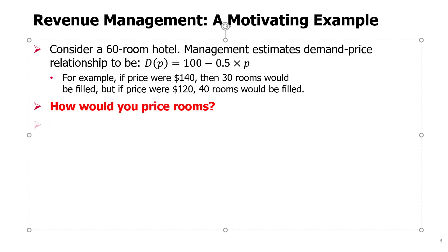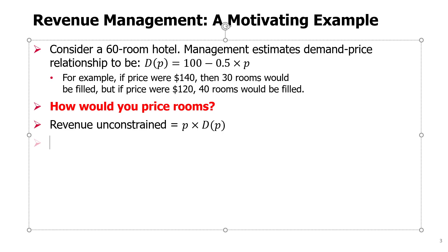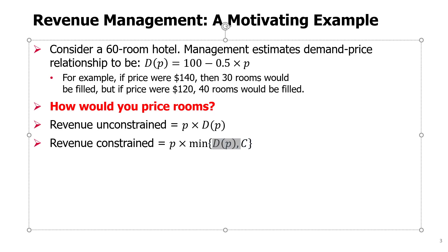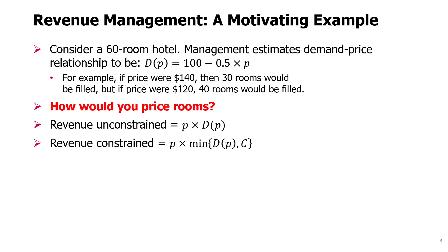The first thing we need to recognize is: if there was no capacity, we could say that our revenue — which I'll call unconstrained revenue — would be just price times demand. But since there is capacity, my revenue will really be price times the minimum of demand and capacity. The moment demand exceeds capacity, I can only sell what capacity allows, and this capacity C is 60.